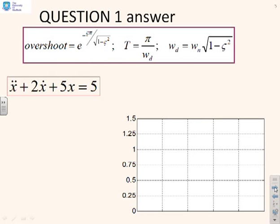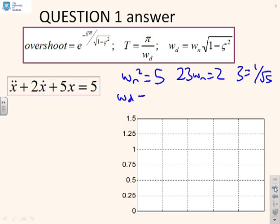First one then. You'll notice we've reminded you of the key formulas at the top, because it's a bit much sometimes to remember those. So what have I got? For this one, I've got ωₙ² equals 5. 2ζωₙ equals 2 tells you that ζ equals 1 over root 5. ωd is going to be root 5 into root of 1 minus 1 over 5, which gives you 2.